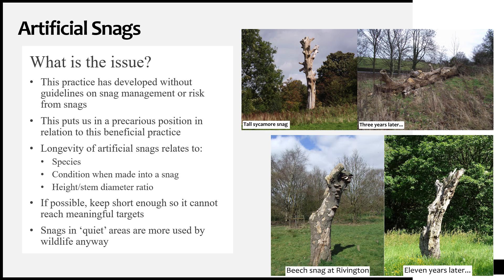Basically, the taller you make it, the narrower it is, and the more decay-prone the wood of the tree selected, the shorter your artificial snag will be standing up. Conversely, the shorter you make it, the greater it is in stem diameter, and the more durable the wood of the tree that you've made it from, the longer the snag will last.